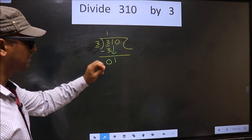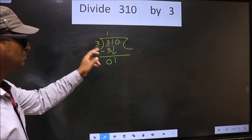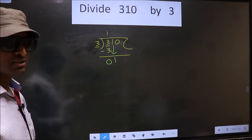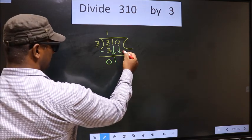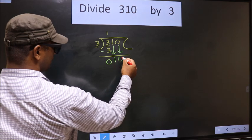Here we have 1, and here 3. 1 is smaller than 3. So what many do is they directly bring down the other number—that is, 0 down.